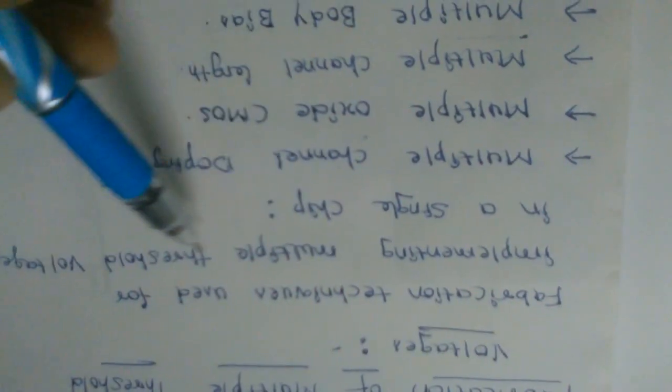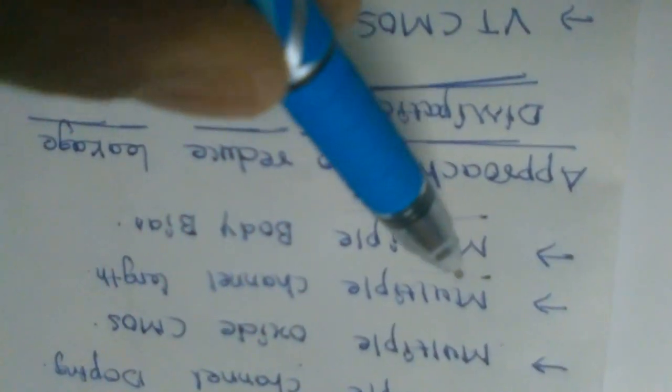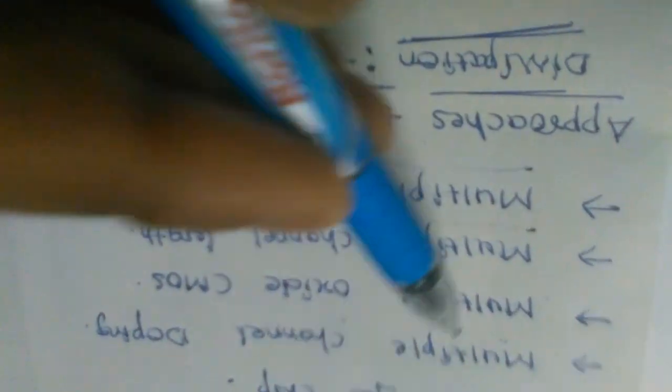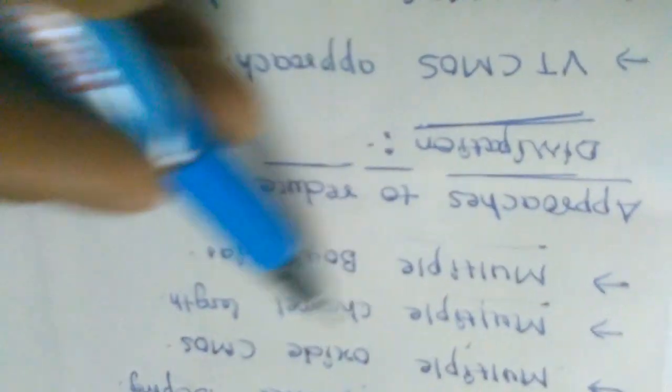Before we discuss in detail, we will see what techniques we are going to use to implement this. The topic is: fabrication techniques used for implementing multiple threshold voltage in a single chip. These are the techniques: multiple channel doping, multiple oxide thickness, multiple channel length, and multiple body bias.